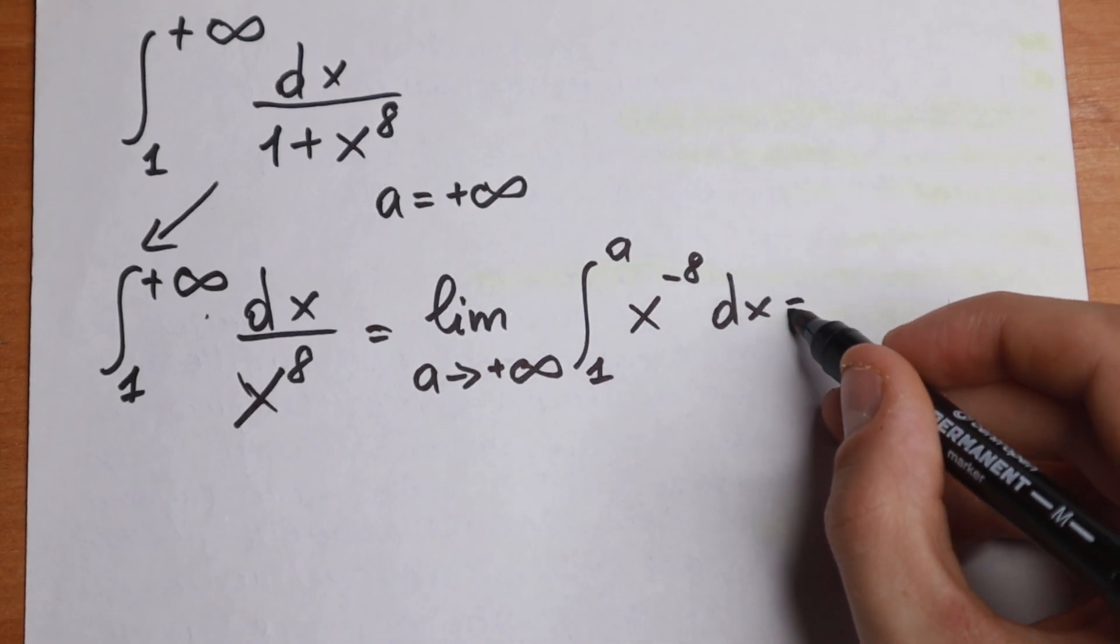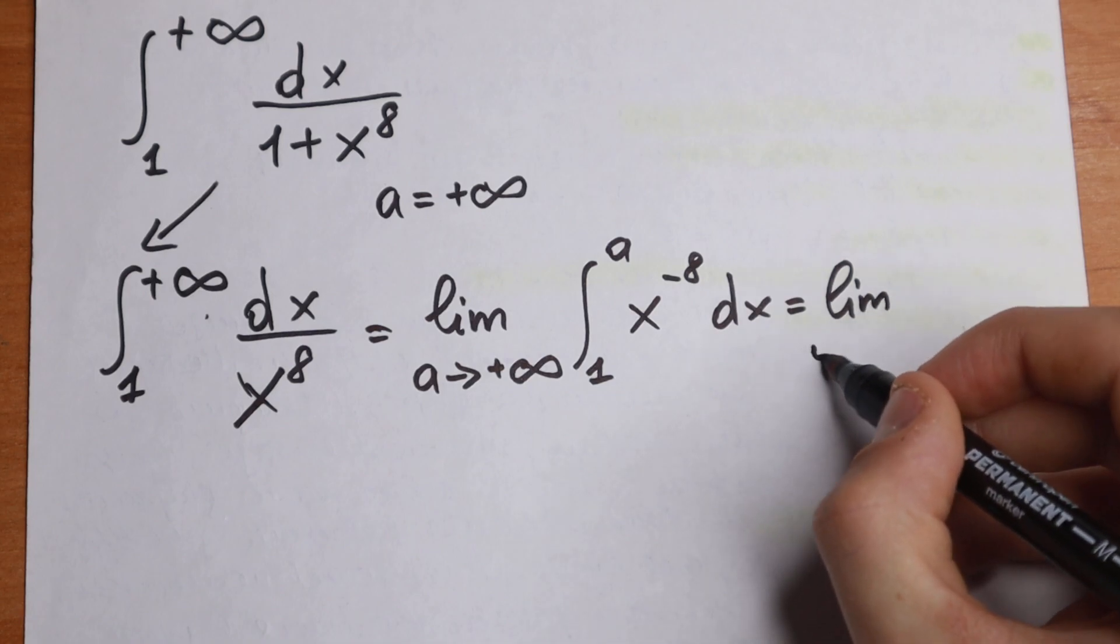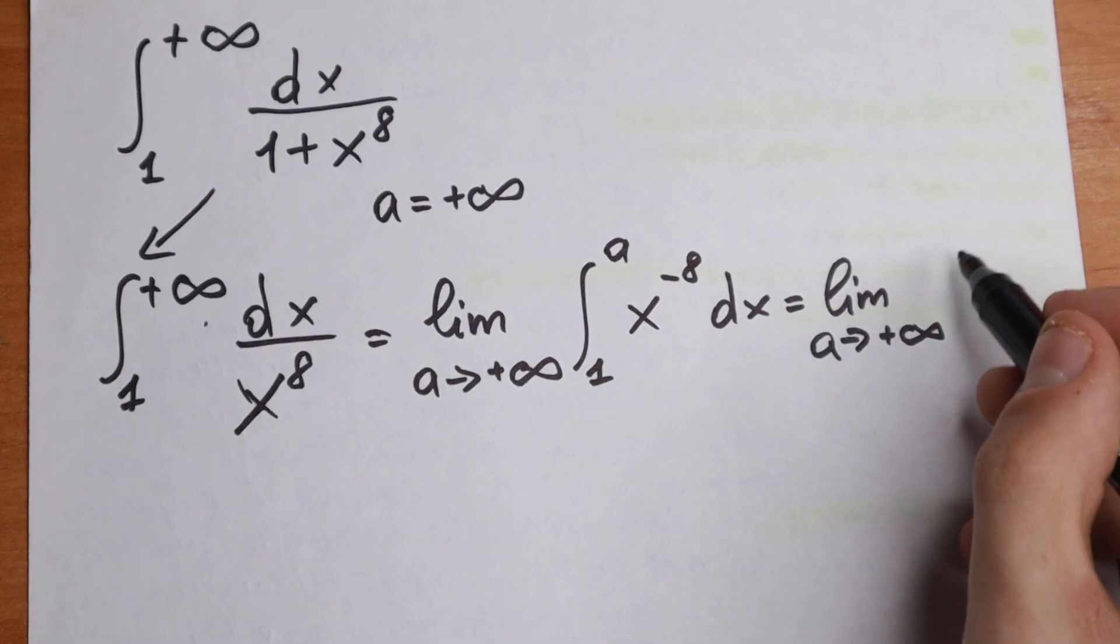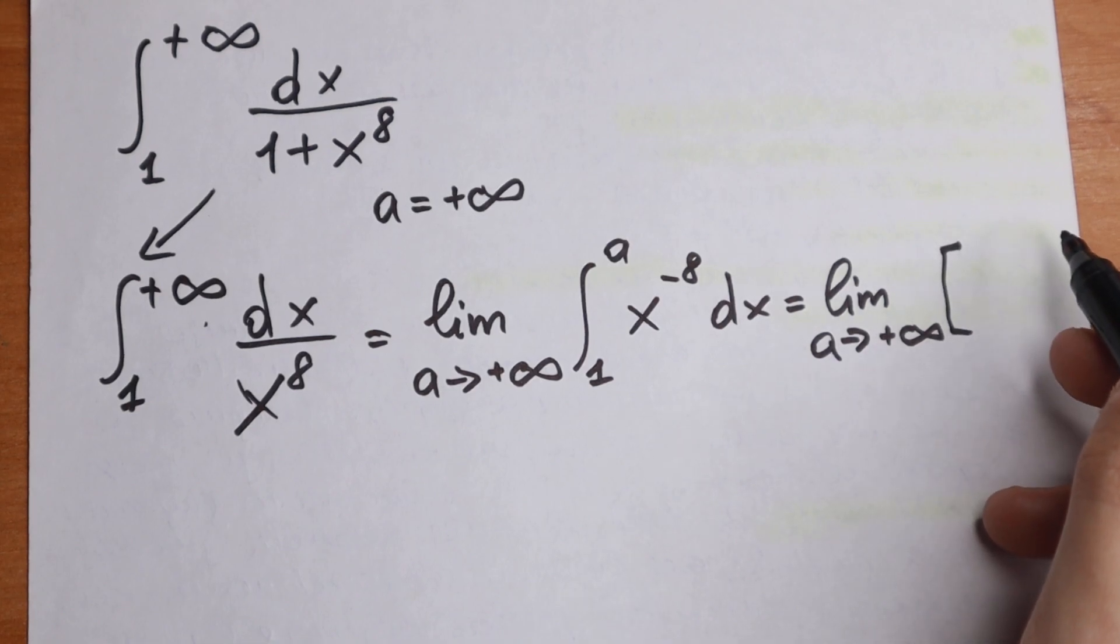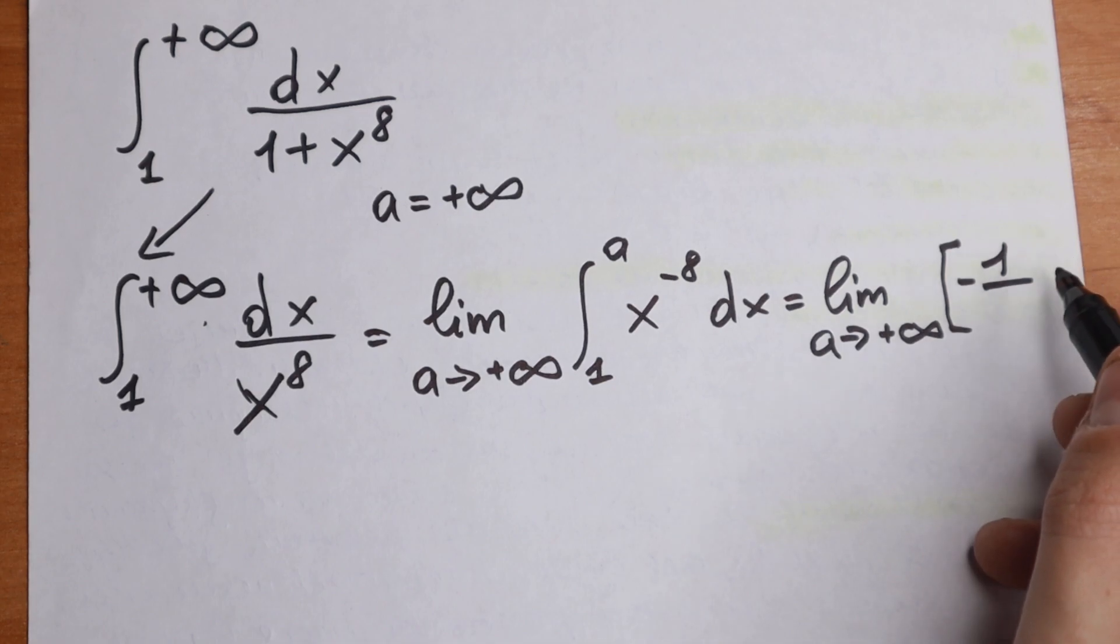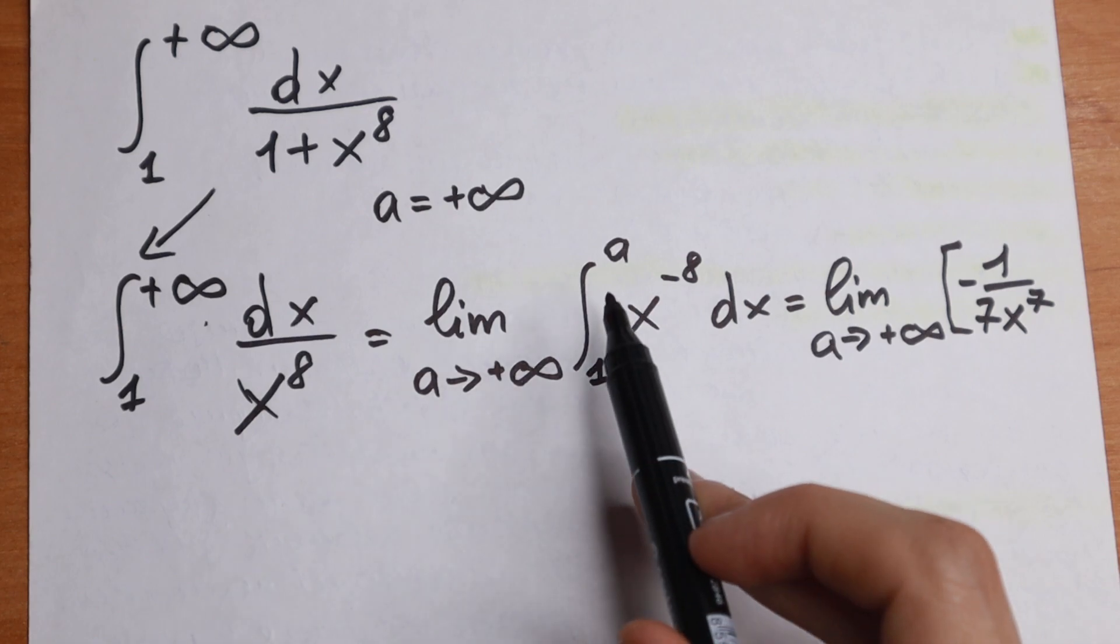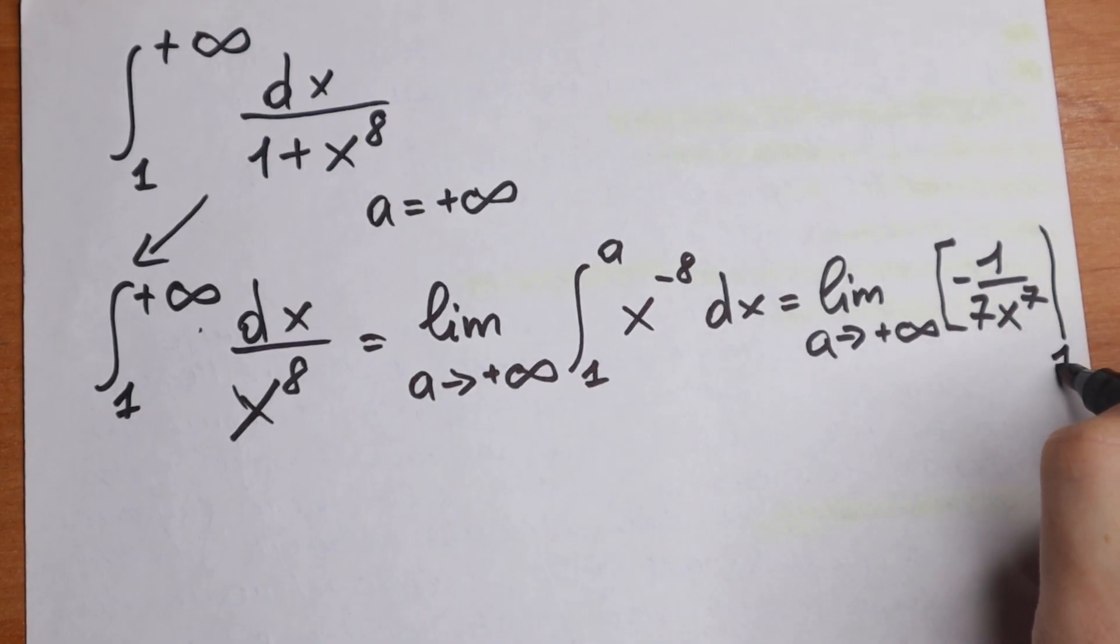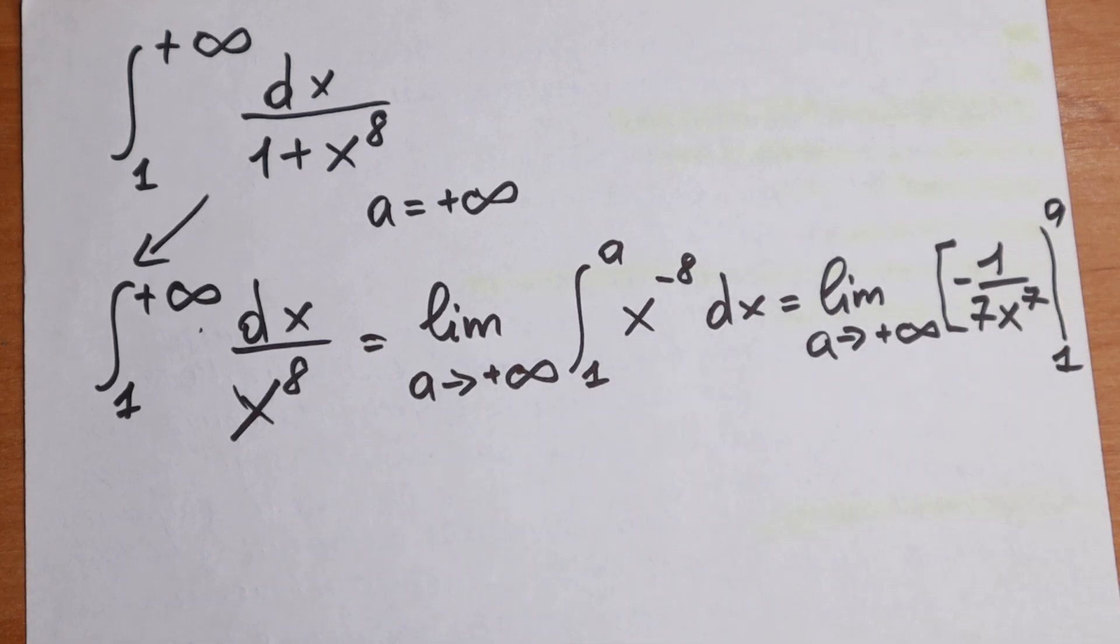Of course we can rewrite this as the limit as a approaches plus infinity of the function. This is our table case. It will be equal to minus 1 over 7x to the 7th power. This will be our integral of this one and of course from 1 to a.